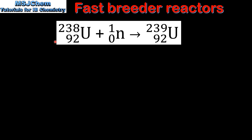The first nuclear reaction is neutron capture, in which the nucleus of an atom absorbs a neutron to form a heavier nucleus. In this reaction we have uranium-238 absorbing a neutron to form uranium-239.